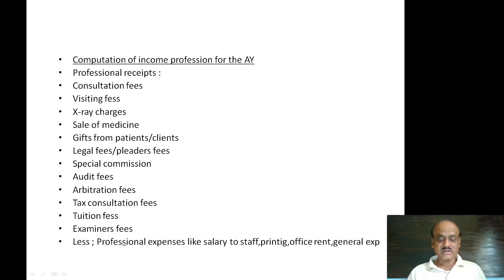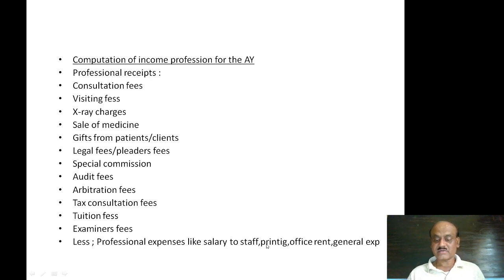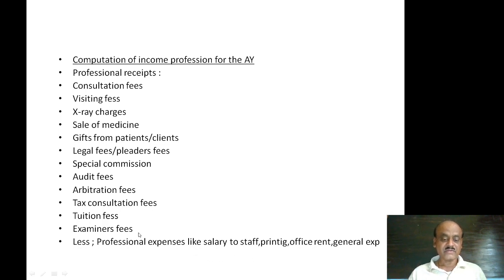From total professional receipts, allowable professional expenses are deducted. Professional expenses include: salary to staff, printing, stationery, office rent, general expenses, and depreciation. These are the usual items of professional expenses. After deducting these, we arrive at the total professional income.